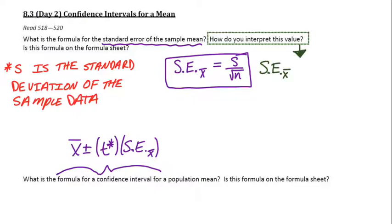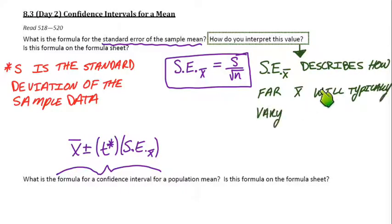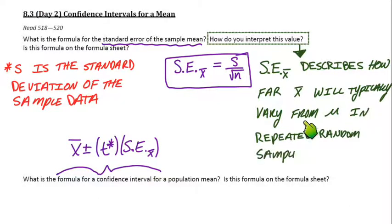So how do you interpret this value, the standard error of X bar? It's similar to the standard deviation interpretation. Now we say it describes how far X bar will typically vary from the thing that we're actually interested in, which is the true population mean, mu. We have to make sure we mention that that's from repeated random samples of the same size, which would be N. So this is a measure of variability, how far X bar typically falls from the true population mean, mu.